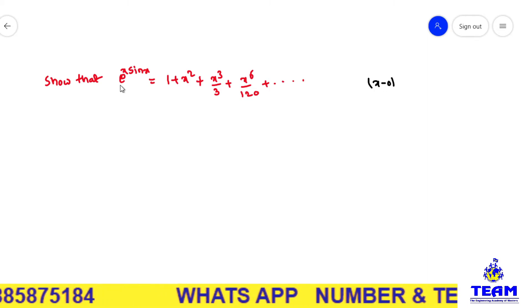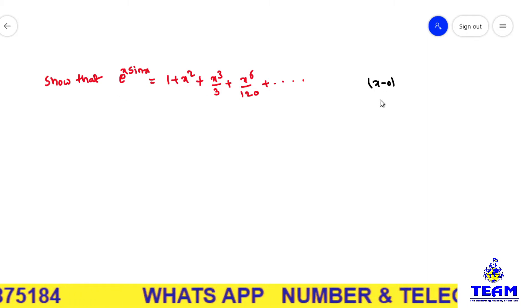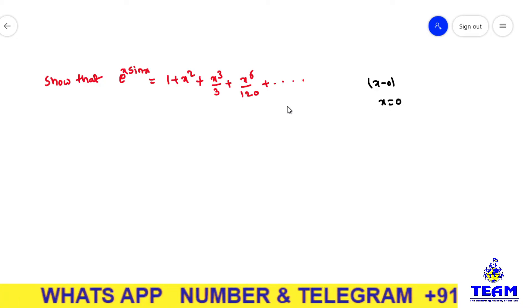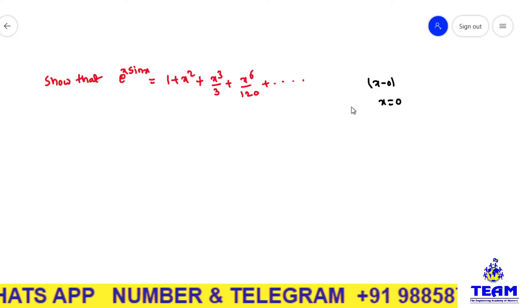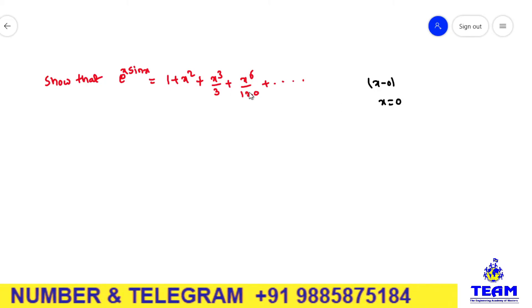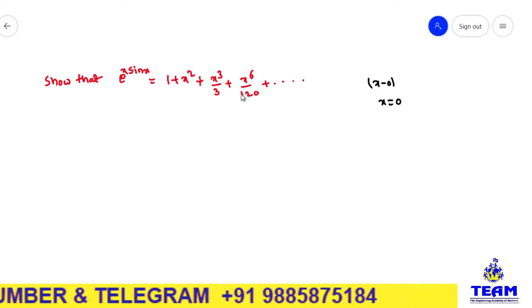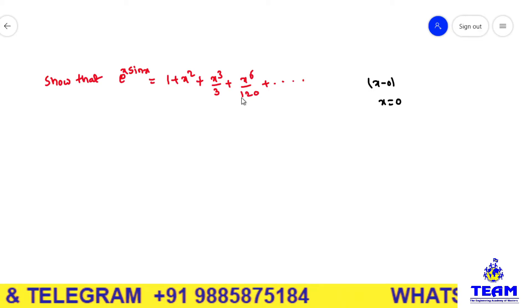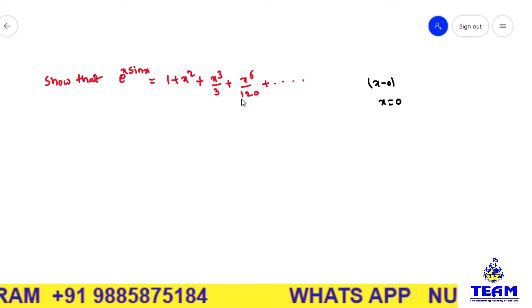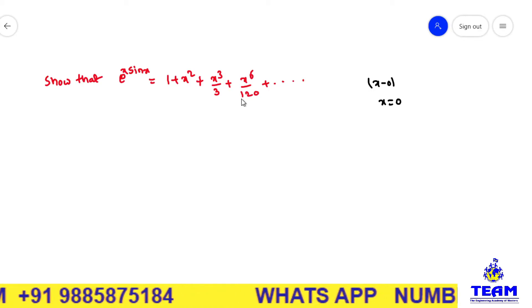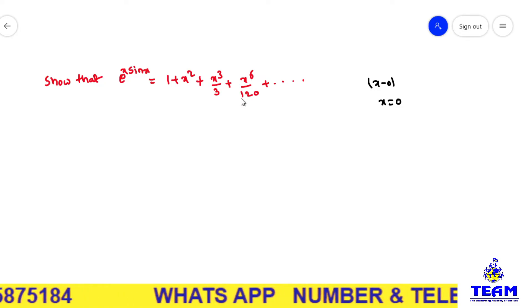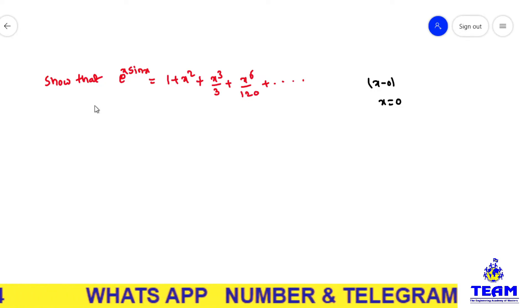This is expanded about x equals 0, so this is nothing but a McLaurin series expansion. Here x power 6 is there, so how many times do we have to differentiate generally? Six times we need to differentiate for the McLaurin series if you want to get it. But this problem we can do in a simple way.